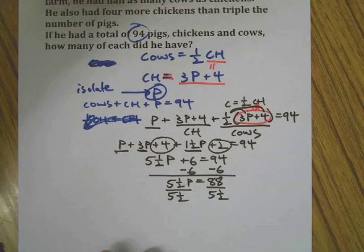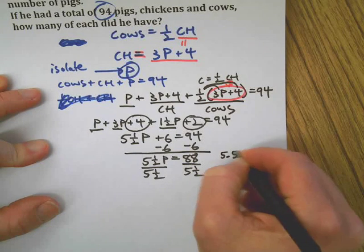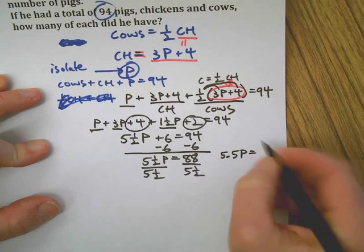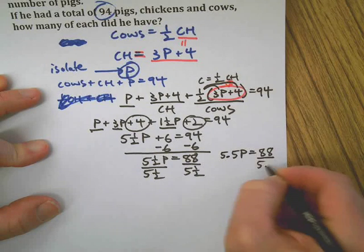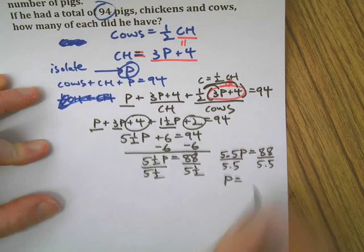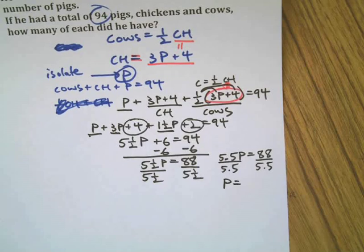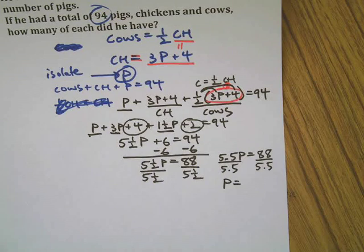Divide both sides by five and a half. This is where I believe it would be handy to use decimals. And what is 88 divided by five and a half? 16.